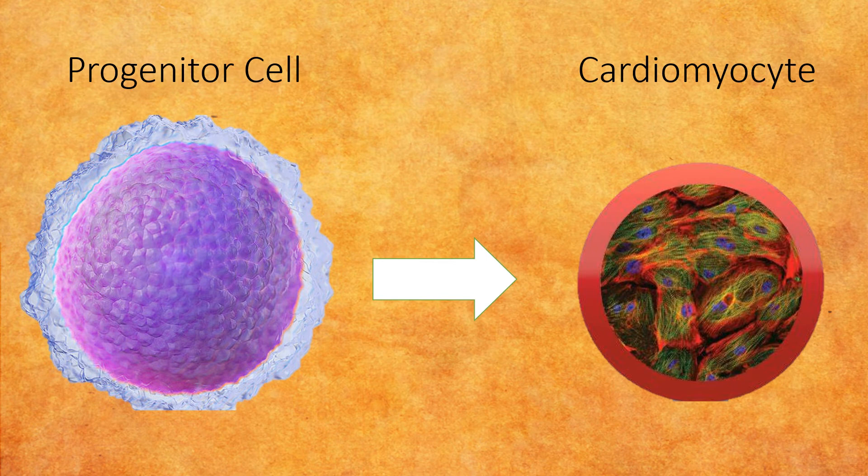These progenitor cells can take the form of the cells of the heart, known as cardiomyocytes, to replace infarcted cells or dead cells in the myocardium and improve cardiac muscle function.